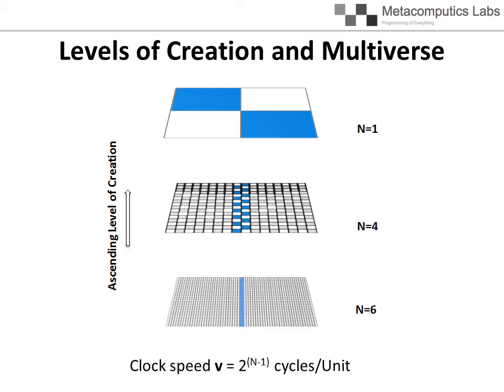At the top level, N equals 1, PM equals 1 unit, clock speed equals 1 cycles per unit.